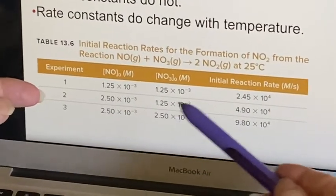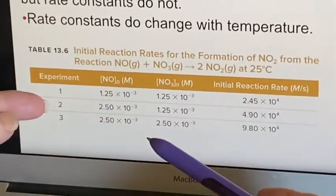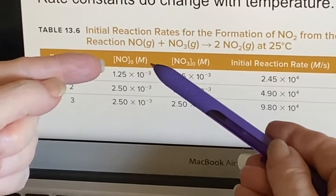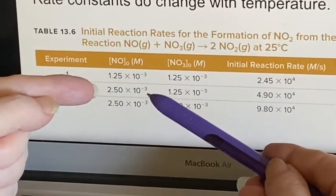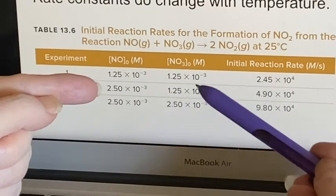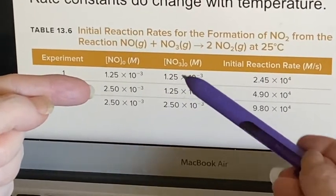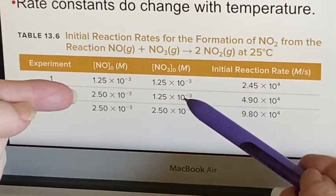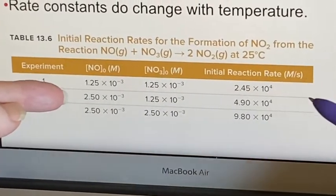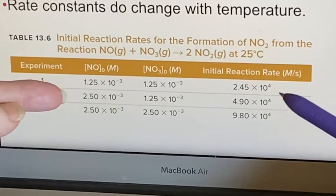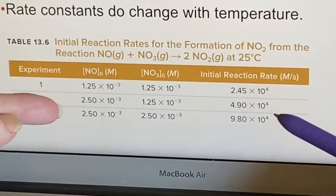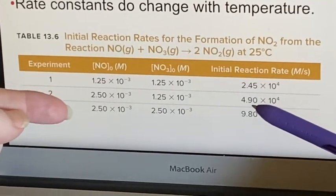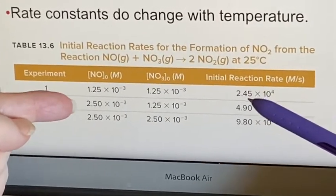What is the difference between experiment one and experiment two? The original amount of nitrogen monoxide has been doubled. This didn't change - the nitrogen trioxide concentration was maintained at the same. The temperature's maintained at the same, but as a result we see that the reaction rate changed.